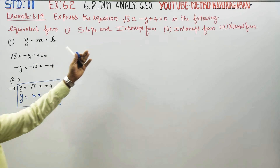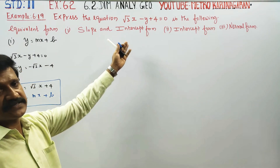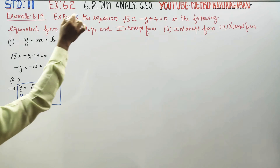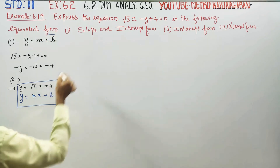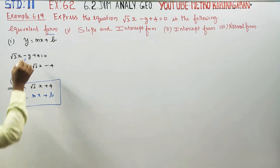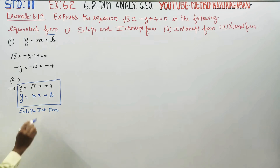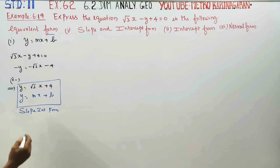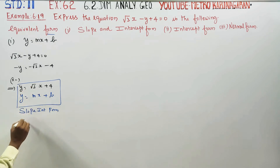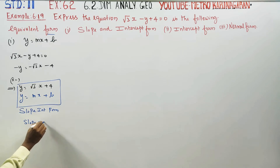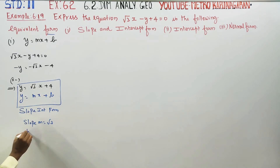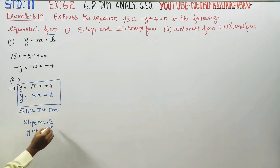Find the slope and find the y-intercept. You can see the y-intercept. Express the equation in slope-intercept form. The slope is m is equal to root 3. The y-intercept, c or b, is equal to 4. This is the answer — the slope-intercept form.